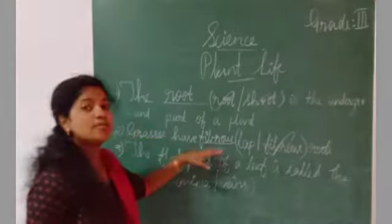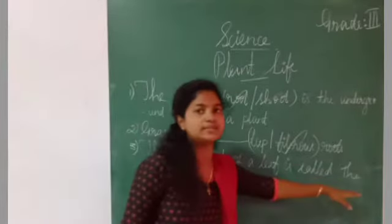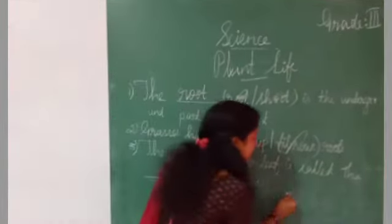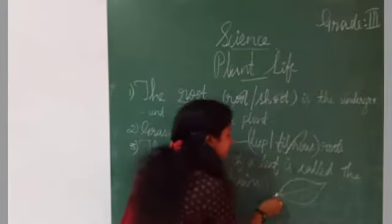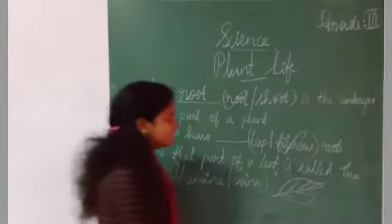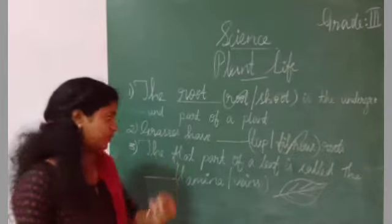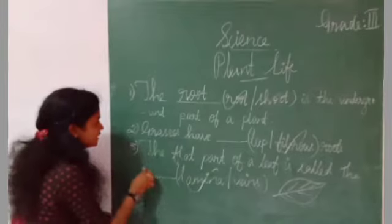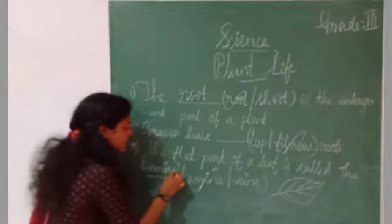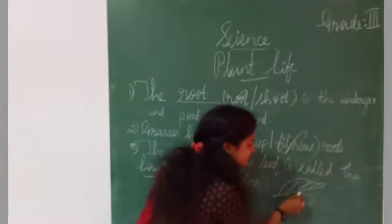Third one: The flat part of a leaf is called the dash. Choices are lamina or vein. Lamina or vein. Tell me. The flat part of a leaf is called lamina or vein? Yes, very good, lamina, right? Yes. L-A-M-I-N-A, lamina. Very good. Then what about vein? Yes, these thin lines are veins, right? These thin lines are veins.